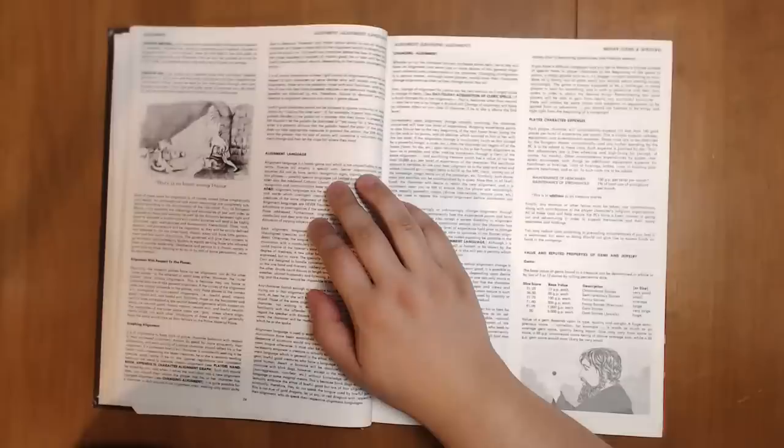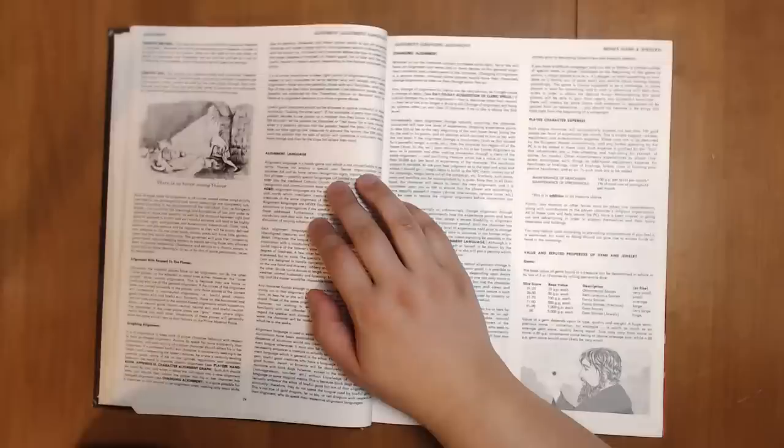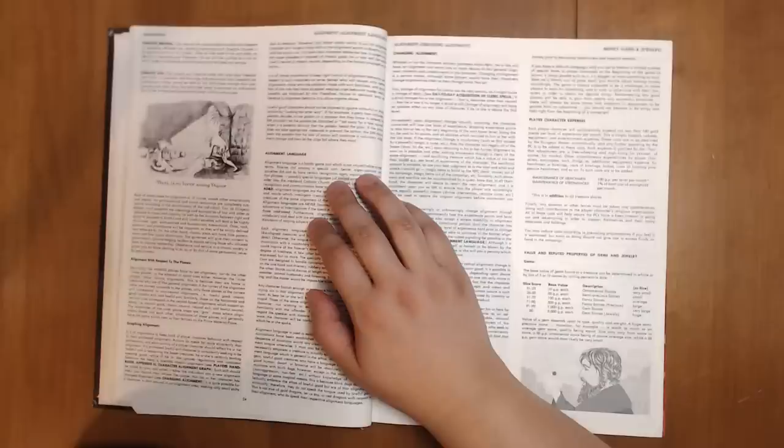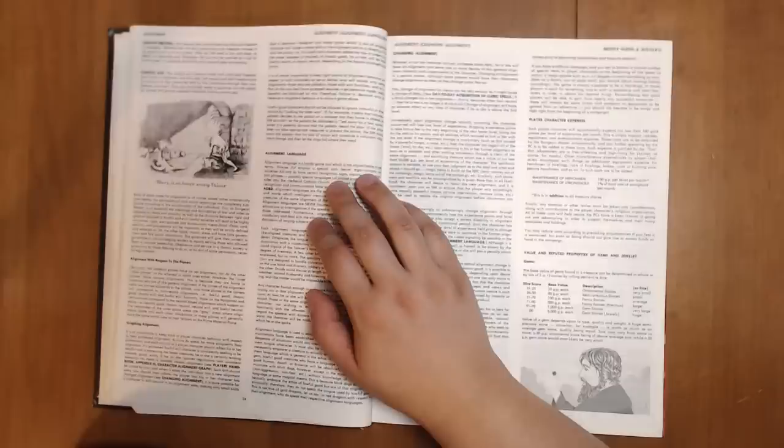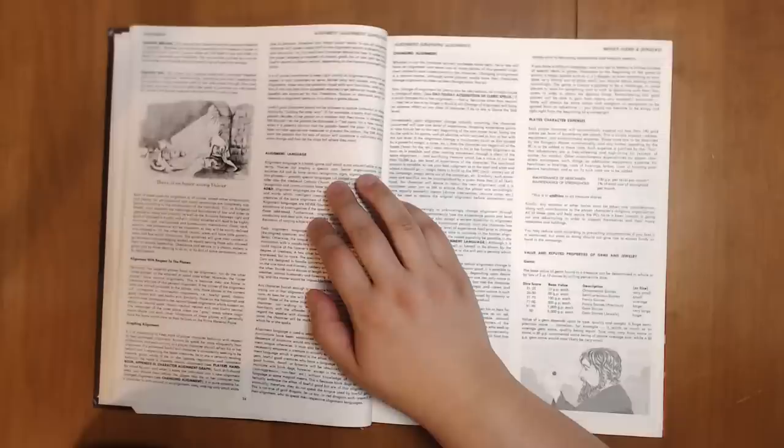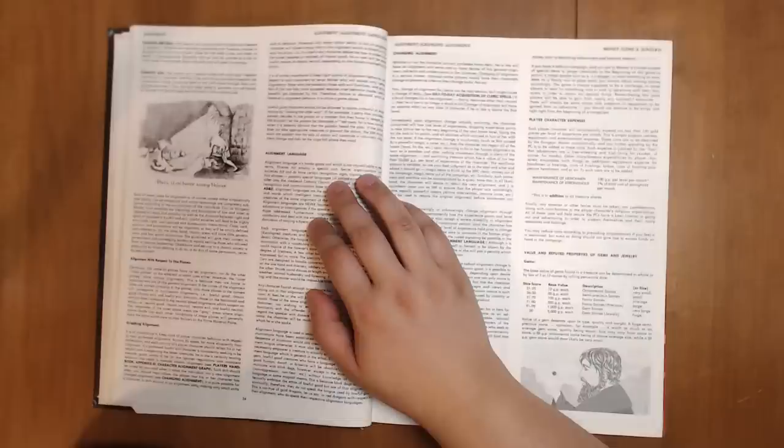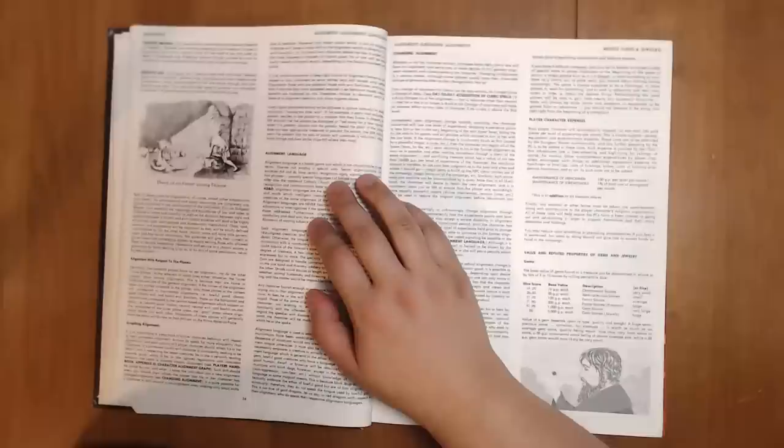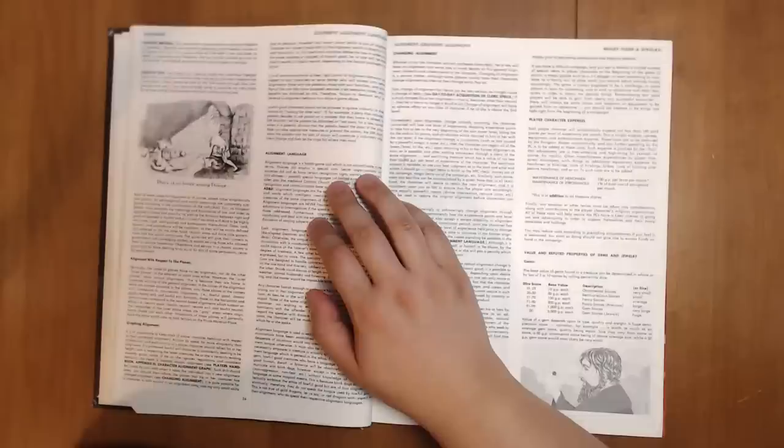Each of these cases for alignment is of course stated rather simplistically and ideally for philosophical and moral reasonings are completely subjective according to the acculturation of the individual. You, as dungeon master, must establish the meanings and boundaries of law and order as opposed to chaos and anarchy as well as the divisions between right and good as opposed to hurtful and evil. Lawful societies will tend to be highly structured, rigid, well-policed and bureaucratic, bureaucratically hierarchical. I feel like there's another typo in there. Class, rank, position and precedence will be important so they will be strictly defined and adhered to. On the other hand, chaotic areas will have little government and few social distinctions. The governed will give their consent to the government, acknowledging leaders as equals.